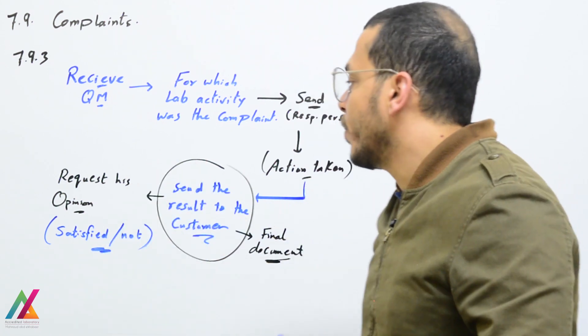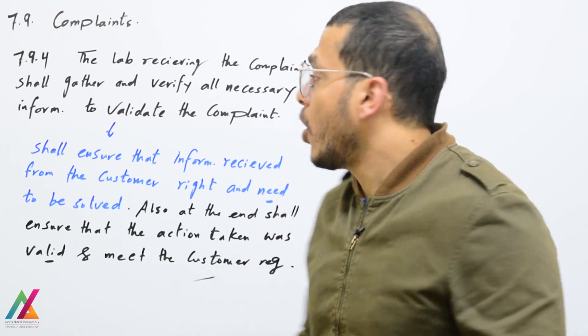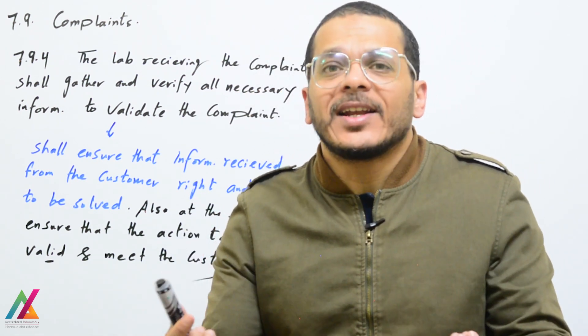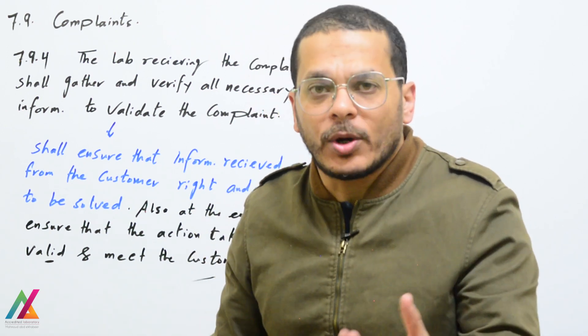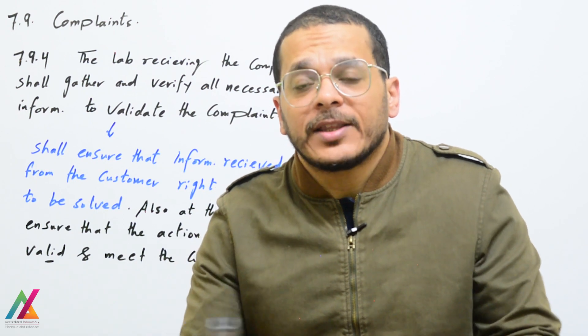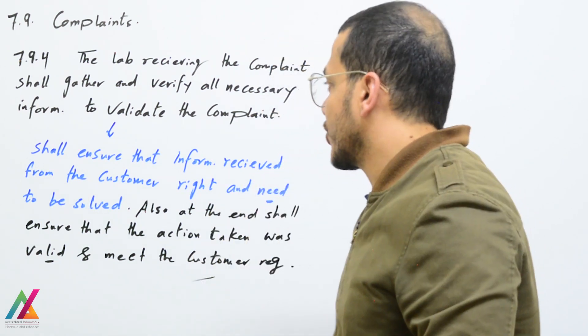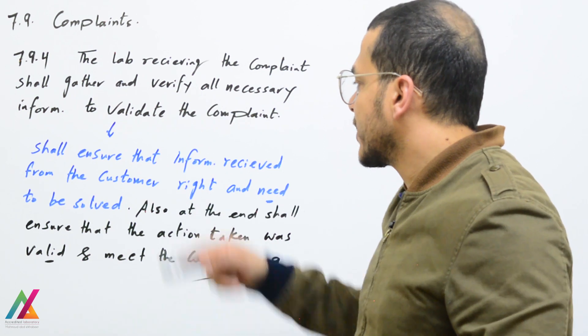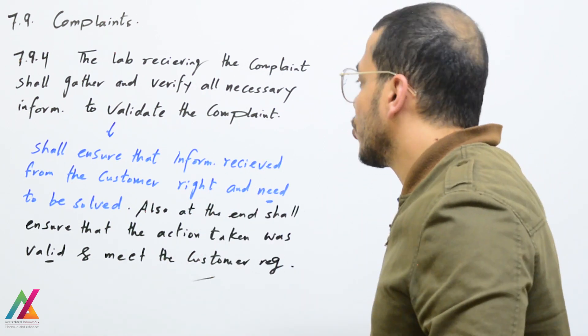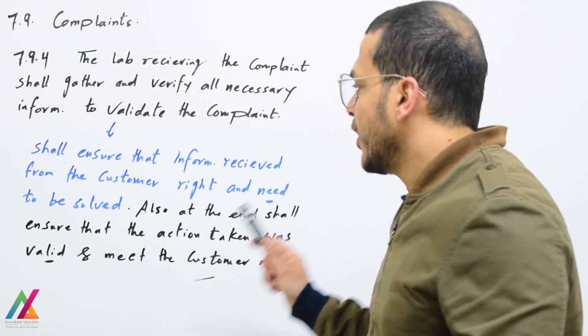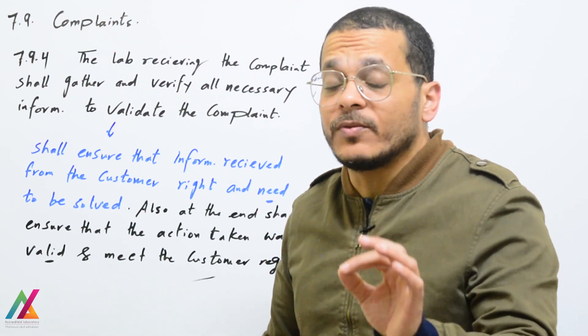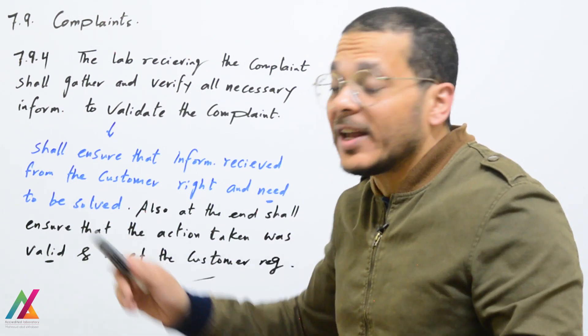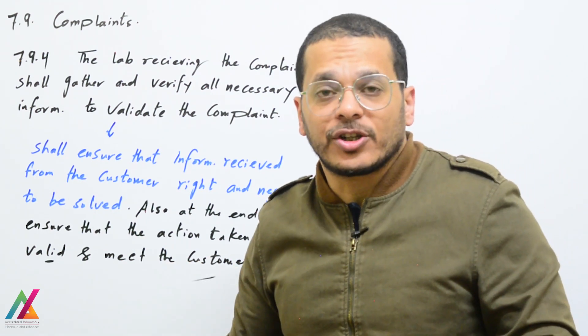The lab receiving the complaint shall gather and verify all necessary information to validate the complaint. At the beginning, you need to ensure the complaint is valid and needs to be solved. After that, you need to give the customer a valid final result that meets their satisfaction. The responsible persons shall ensure that the information received from the customer is correct and that there is a real issue to be solved, and also ensure that the action taken to solve the issue was valid and meets the customer's requirements.